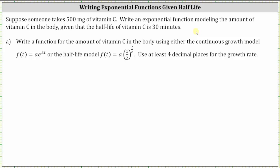For part A, we're asked to write a function for the amount of vitamin C in the body using either the continuous growth model, f of t equals a times e to the power of kt, or the half-life model, f of t equals a times one-half to the power of t divided by c. In this lesson, we will be using the half-life model.